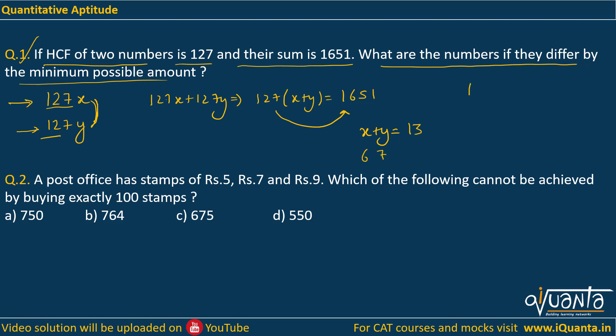So one of the numbers would be 127×7, another would be 127×6. These will be the numbers. Now you can calculate their values: this will be 889, this will be 762. Let us try to solve the second question now.